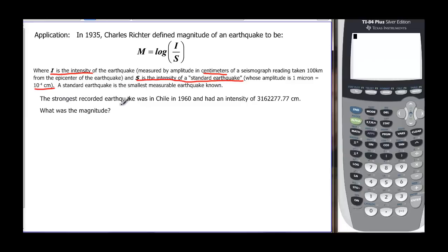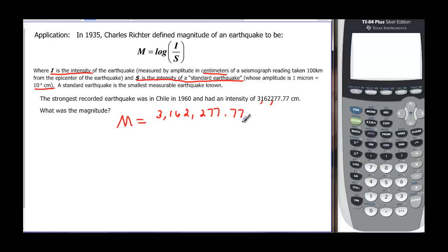The strongest recorded earthquake in 1960 was given by an intensity of 3,162,277.77 centimeters. We want to know what the magnitude is, so m equals the log of i — which they gave us, 3,162,277.77 centimeters — divided by the standard earthquake, which is 10 to the negative 4.